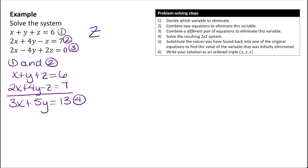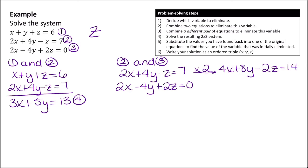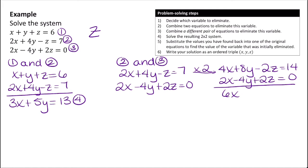Now I'll pick a different pair — equations 2 and 3 — because Z has opposite signs in these. I have 2x plus 4y minus z equals 7, and 2x minus 4y plus 2z equals 0. To cancel the z terms, I multiply the top equation by 2, getting 4x plus 8y minus 2z equals 14. Adding that to 2x minus 4y plus 2z equals 0 gives 6x plus 4y equals 14. I'll call this equation 5.